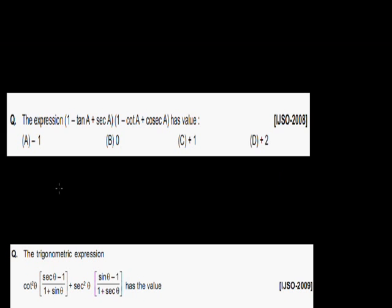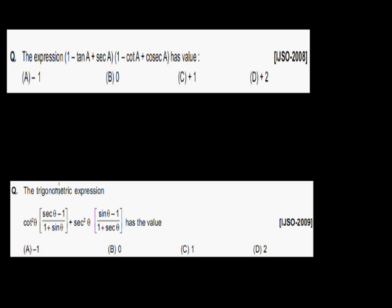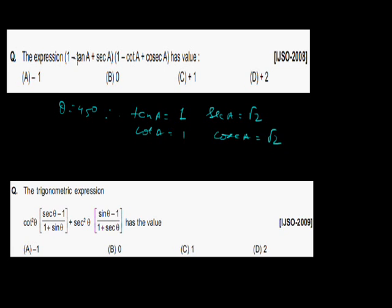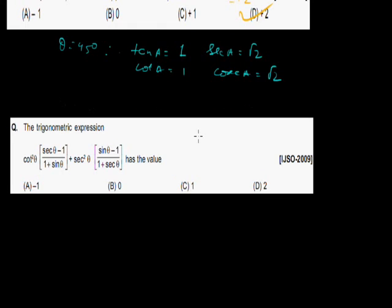Now we will start with the first problem. Pause the video, write down the problems, and try to solve them on your own. The expression is (1 minus tan a)·sec a, times (1 minus cot a) plus cos a — what is the value of A? It is not necessary to solve from scratch because we have the options. We put θ = 45°. So tan 45° = 1, sec 45° = √2. Put the value: cot a is 1, cos a is 1/√2. We get (1 minus 1)·√2 = 0, and then √2 × √2 = 2. The answer is 2. In the examination, the main thing is to get the correct answer quickly.